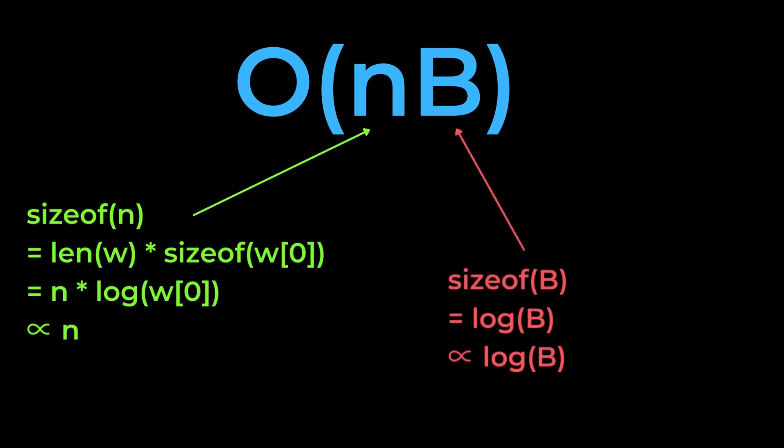B is an integer however, so its size will grow logarithmically, despite the fact that the runtime grew linearly with the value of B.